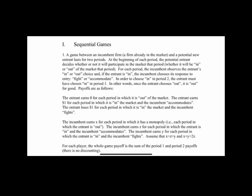A game between an incumbent firm that's already in the market and a potential new firm lasts for two periods. At the beginning of each period, the potential entrant decides whether or not it will participate in the market that period — whether it will be in or out. For each period, the incumbent observes the potential entrant's in or out choice. If the potential entrant is in, the incumbent chooses to fight or accommodate. In order for the potential entrant to choose in in period two, they must have chosen in in period one. So if the entrant chooses out, it's out forever.